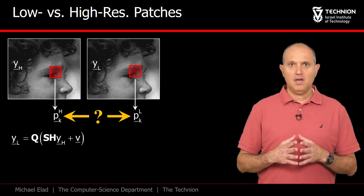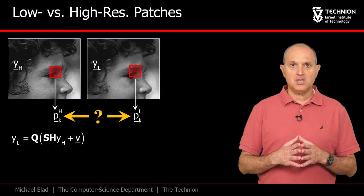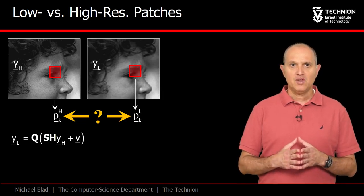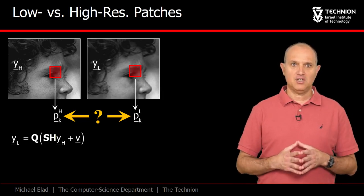Globally, the relation between yH and yL is given by this equation. Observe the appearance of q that magnified the image back to the destination size.